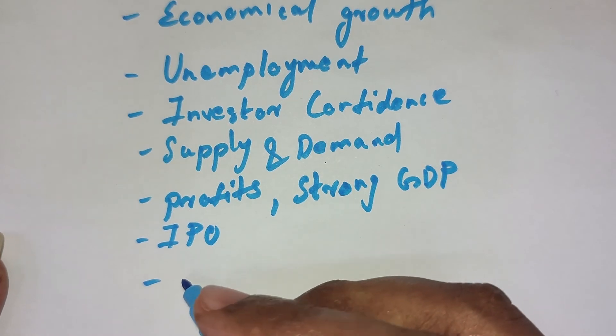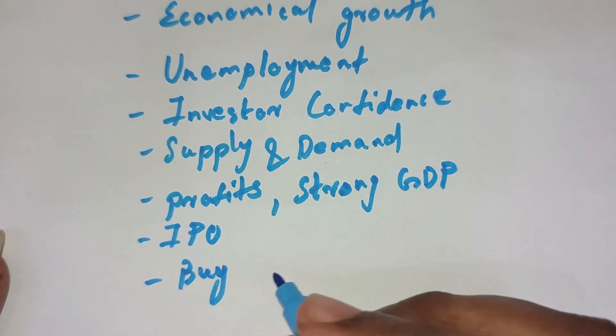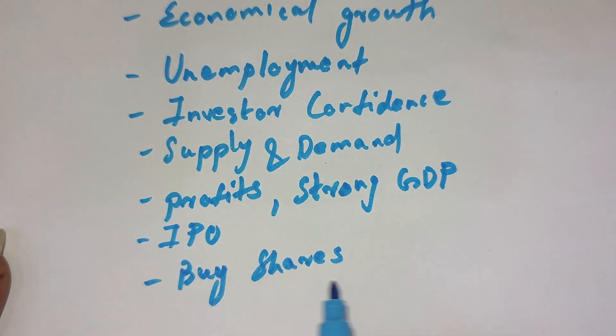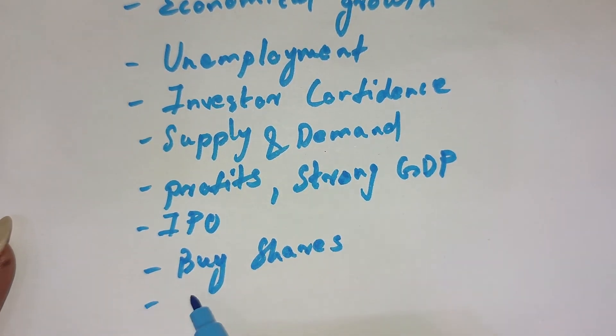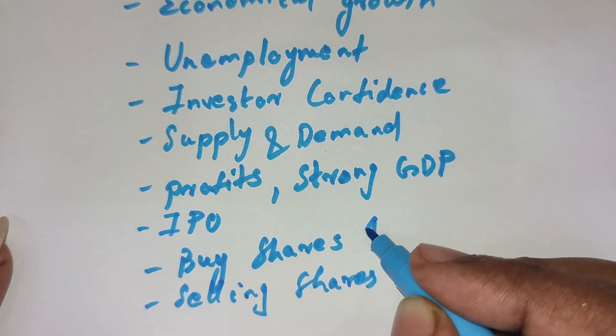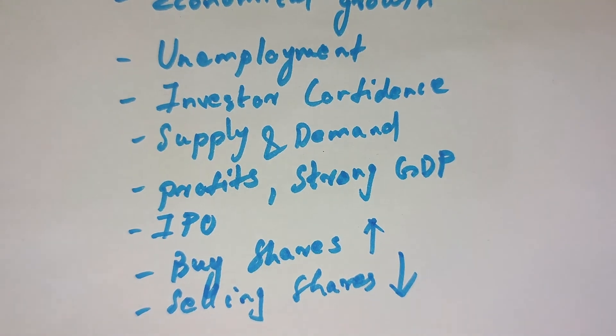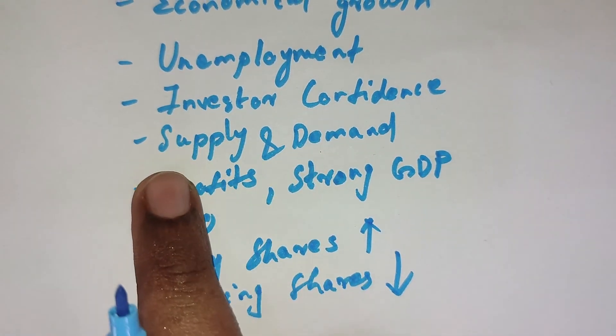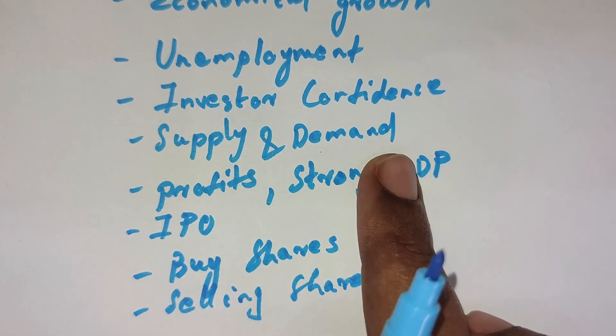In layman terms, people want to buy shares or whatever being traded in that market, but selling shares will go down. This will go up, this will go down, which will eventually result in affecting the supply and demand chain - they won't be equal.